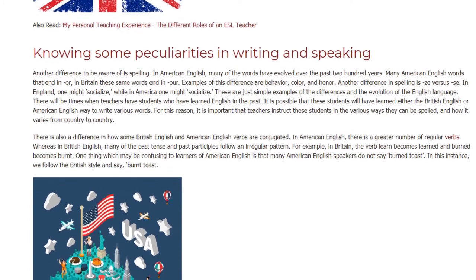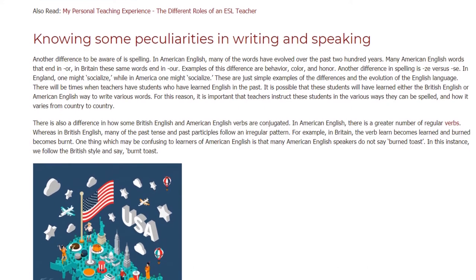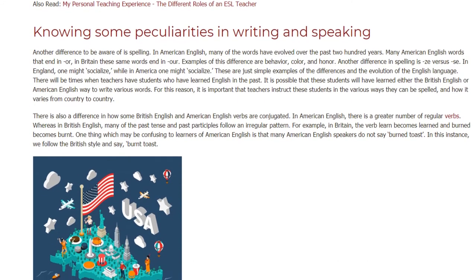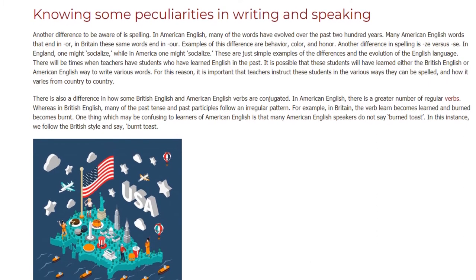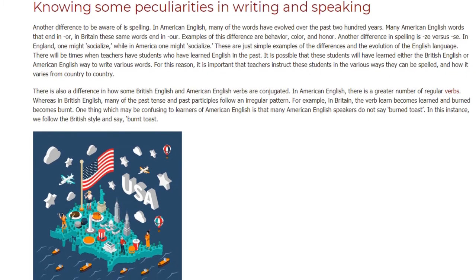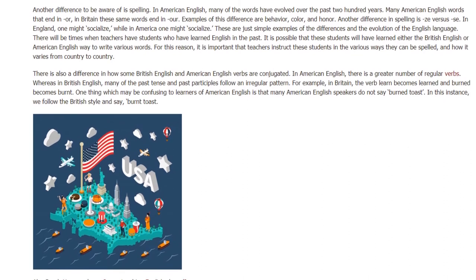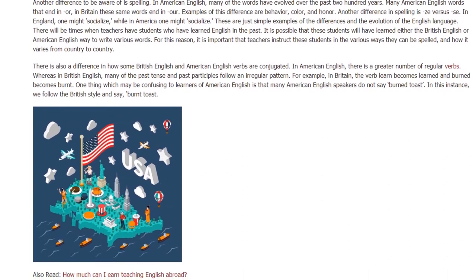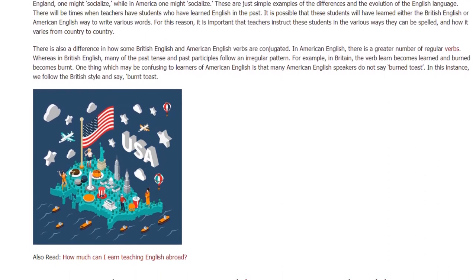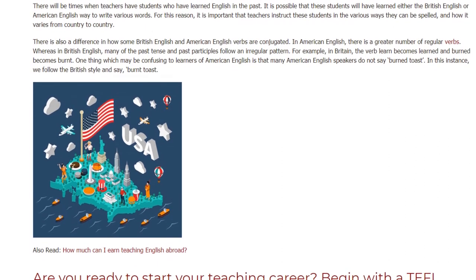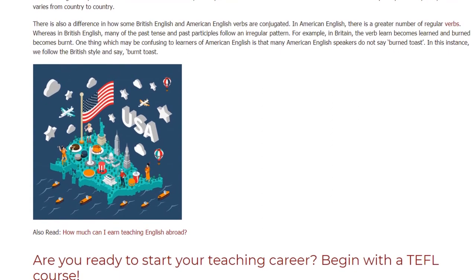There is also a difference in how some British English and American English verbs are conjugated. In American English there is a greater number of regular verbs, whereas in British English many of the past tense and past participles follow an irregular pattern. For example, in Britain the verb 'learn' becomes 'learnt' and 'burn' becomes 'burnt.' One thing which may be confusing to learners of American English is that many American English speakers do not say 'burn toast' — in this instance we follow the British style and say 'burnt toast.'